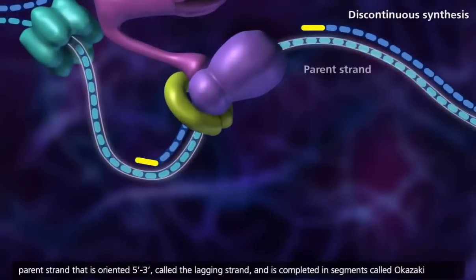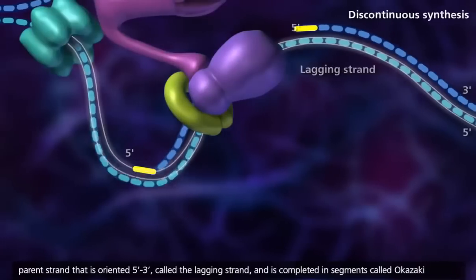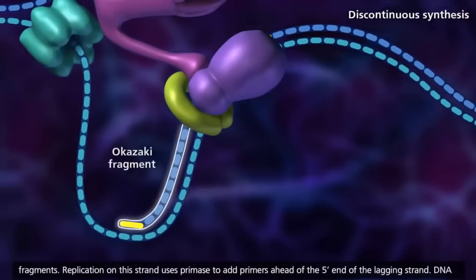Discontinuous synthesis occurs on the parent strand that is oriented 5' to 3', called the lagging strand, and is completed in segments called Okazaki fragments.